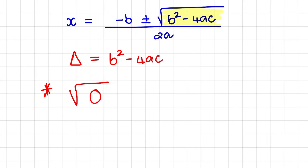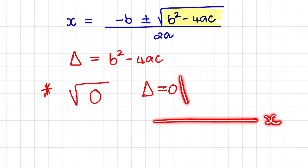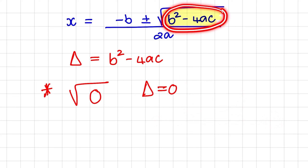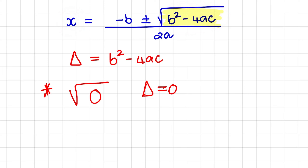Secondly, we can have the square root equal to zero, meaning b squared minus 4ac equals zero, so delta is equal to zero. In that instance, we have a parabola that only intersects with the x-axis once — the turning point is exactly on the x-axis. That is when delta equals zero, and we will find only one value for x.